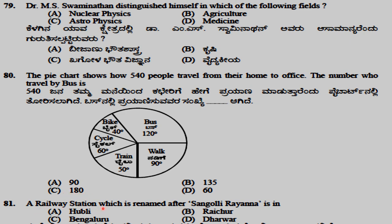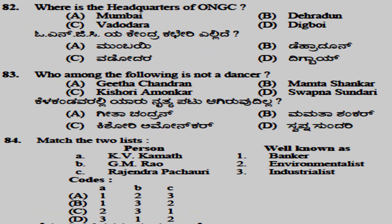The railway station renamed after Sangolli Rayanna is Bengaluru. The headquarters of ONGC is in Dehradun. Among the following, Kishori Amonkar is not a dancer — she is a vocalist.